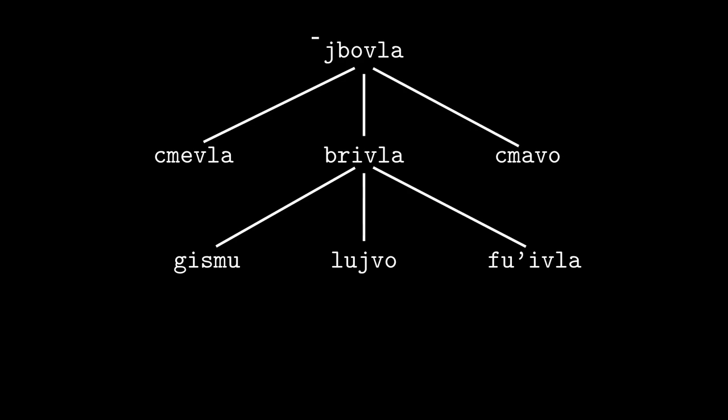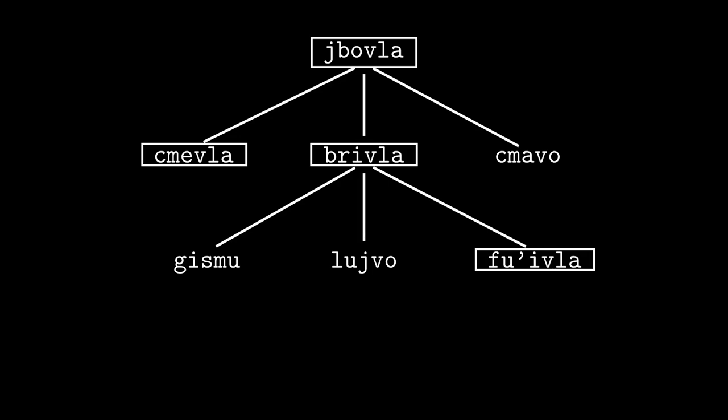By the way, what's with all the -vla endings? The words shbovla, brivla, fuhivla, and shmevla are all lujvo, with -vla being a rafsi for the word valsi, which just means x1 is a word meaning x2 in language x3. Shbovla just means Lojban word, brivla means predicate word, fuhivla means copy word, and shmevla means name word.